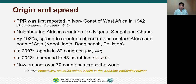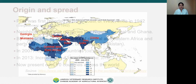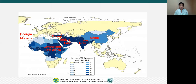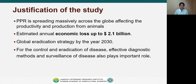PPR was first reported in the Ivory Coast of West Africa in 1942. The disease then spread to neighboring African countries like Nigeria, Senegal and Ghana. By the 1980s it spread to Central and Eastern Africa. By 2007 the disease was reported in 39 countries, increasing to 43 countries in 2013, and now the disease is present in over 70 countries across the world. Notably, it has reached Europe's doorsteps with cases reported in Georgia and Turkey.